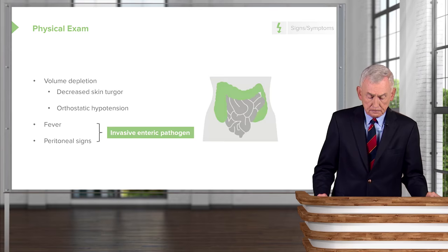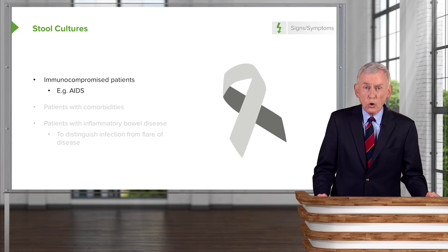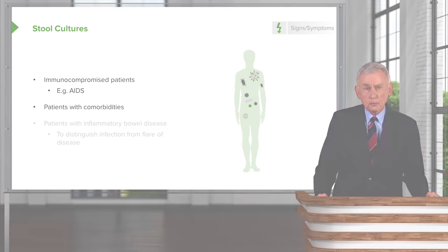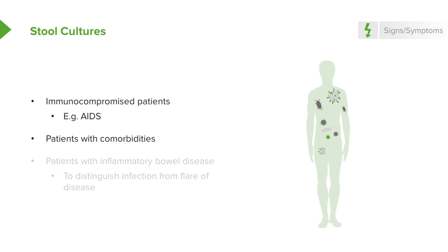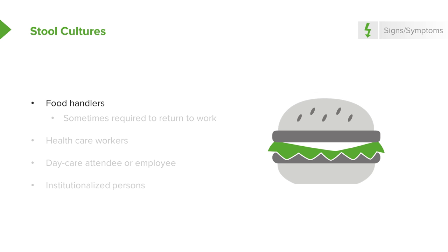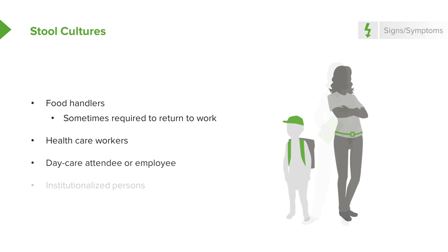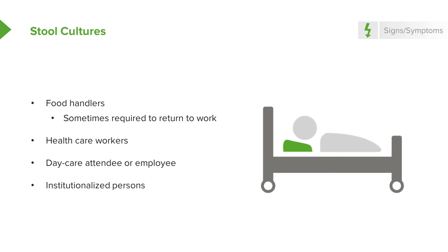When should you go ahead and culture the stool? Immunocompromised patients — for example, AIDS patients — should have stool cultured to identify what's growing. Patients with comorbidities such as diabetes, ulcerative colitis, or Crohn's disease also warrant culturing to distinguish infection from a disease flare. Food handlers may be required to provide a stool culture to prove the pathogen is no longer present before returning to work. The same applies to healthcare workers, daycare attendees or employees, and institutionalized persons, since certain causes of diarrhea can run rampant in institutions.